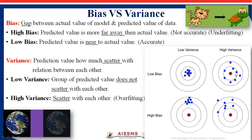In high bias and low variance, the predicted value is far away from the actual value — there is a lot of distance between them — but the group of predicted data is clustered together. In high bias and high variance, the predicted value is far away from the actual value and all the points are also scattered with each other. So the best condition is low bias and low variance.